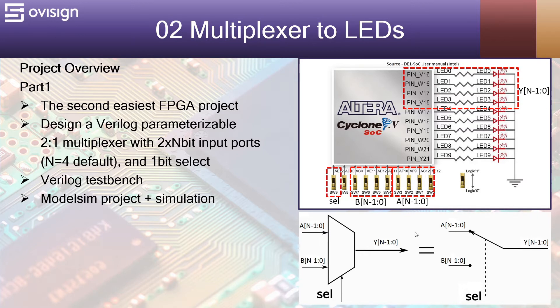A multiplexer works in the following manner. Let's say we have these two inputs and one select. When select equals 0 then the value of A will be driven to Y. Otherwise if select equals 1 then B will be driven to Y. It works exactly the same as your light switch.